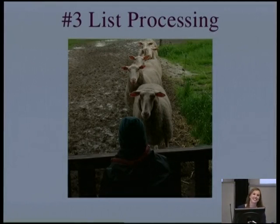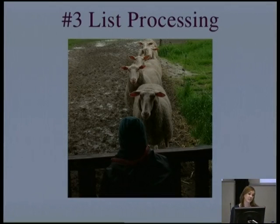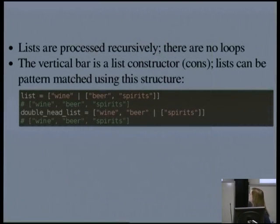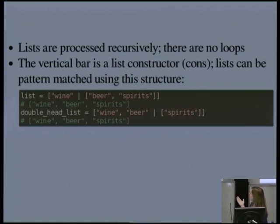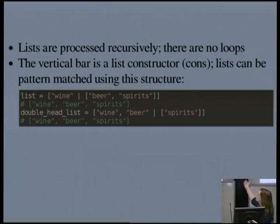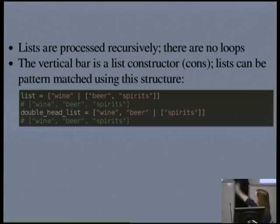The next thing I want to look at is list processing. This harks back to one of the oldest programming languages, Lisp, of course, which is named after list processing. Lists have a natural recursive definition — a list can be looked at as either an empty list or an element consed or constructed on with the tail of the list. Lists defined in that way are sometimes called cons lists or cons cell lists. In Elixir, you can match on lists using this pattern — lists are processed recursively, as are all the other data structures, there are no loops. The vertical bar is that list constructor or cons function. You can build a list by saying wine consed on to the list of beer and spirits, giving you the list wine, beer and spirits. Unlike some other languages, you can also put two arguments into cons as well as the tail of the list.